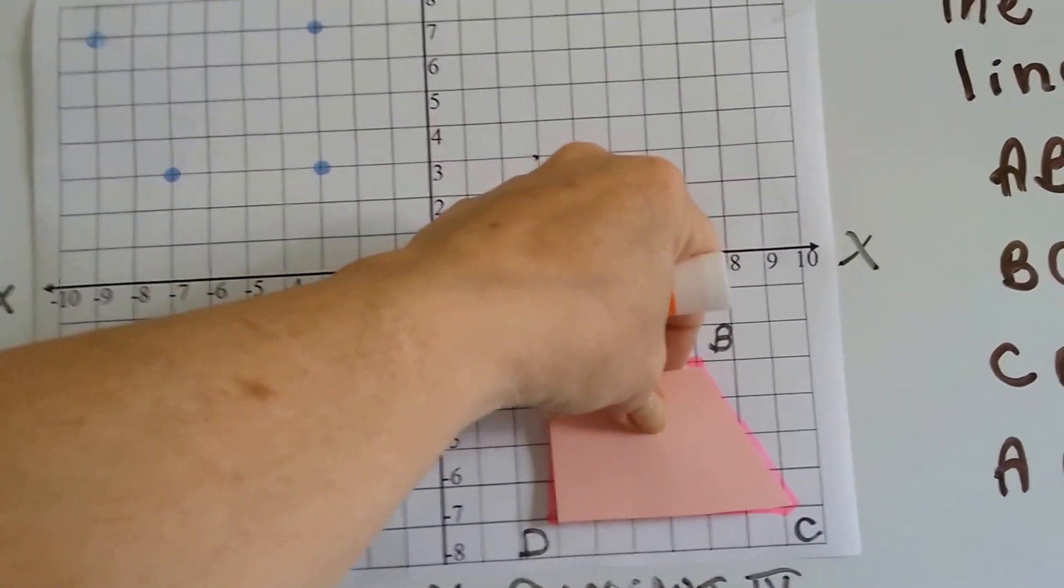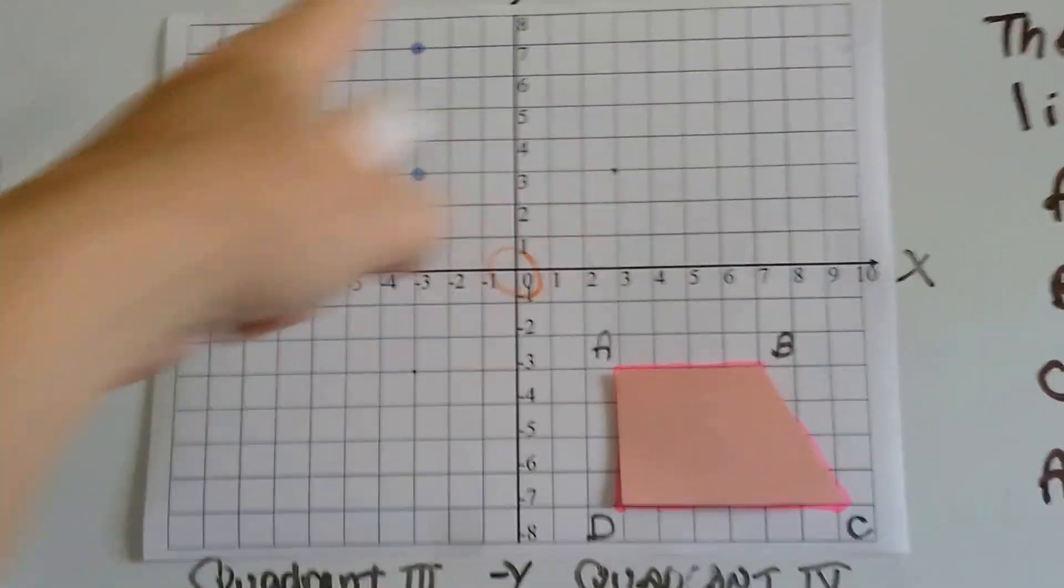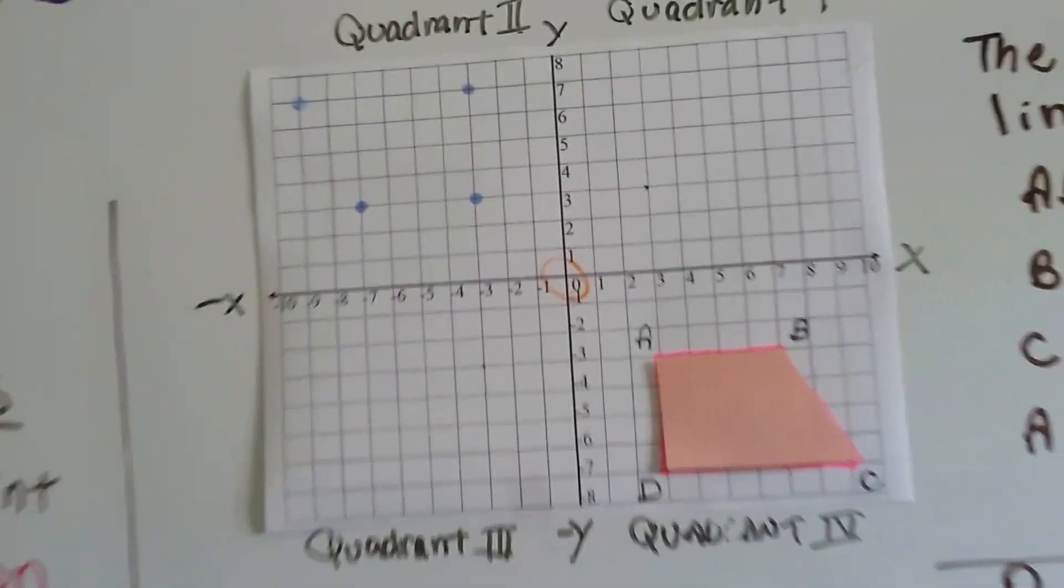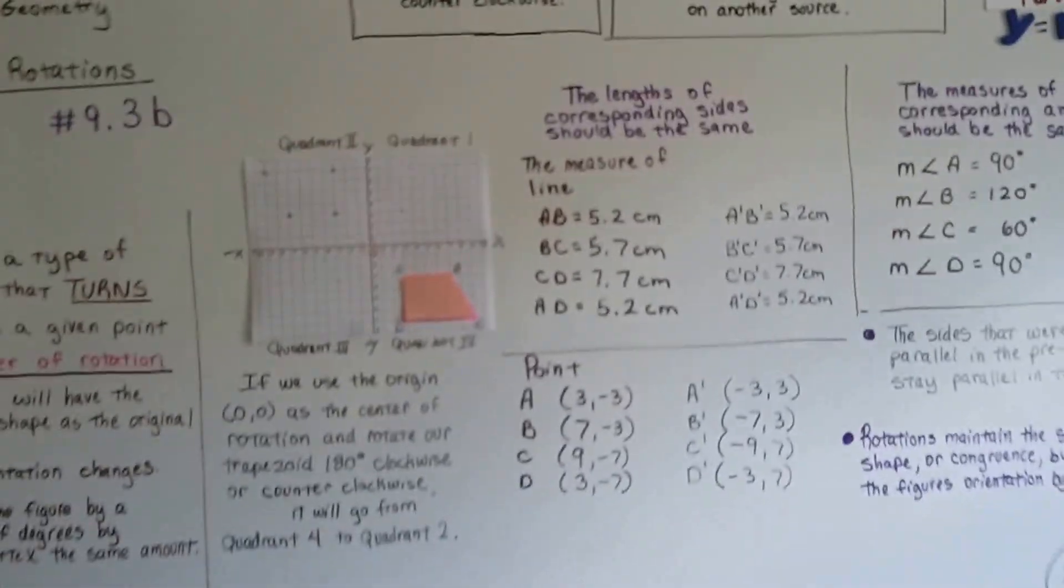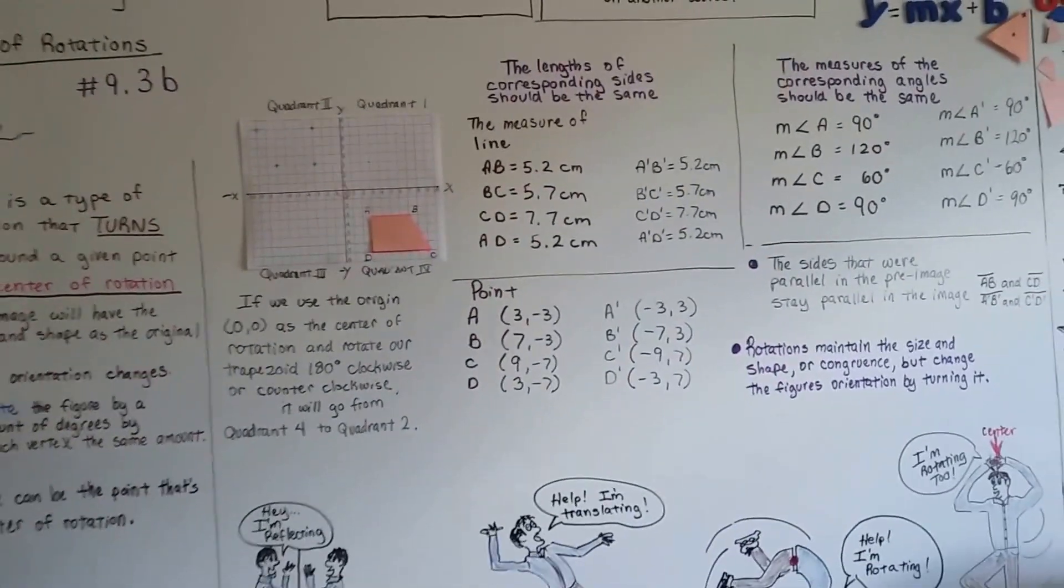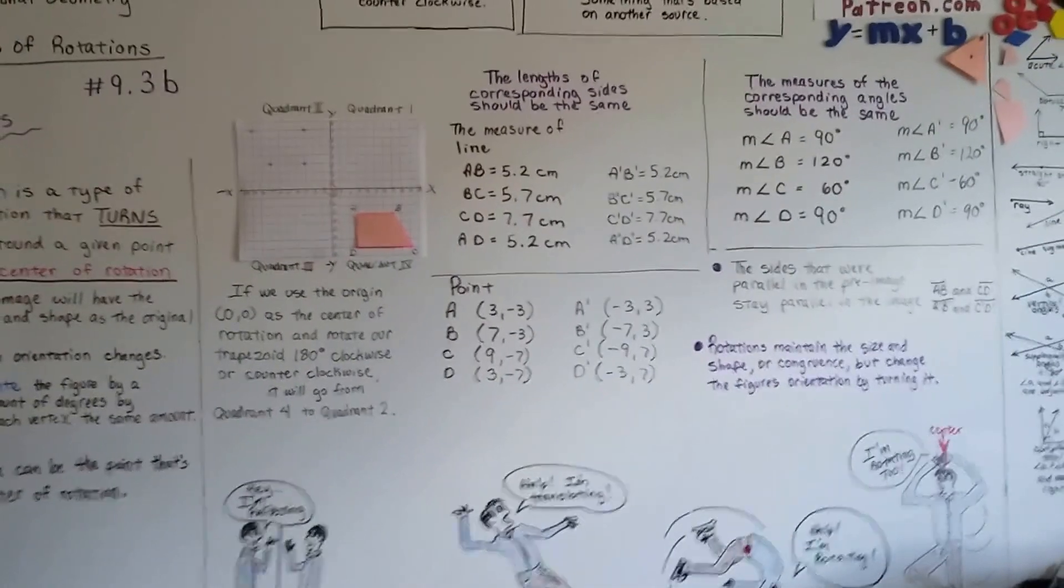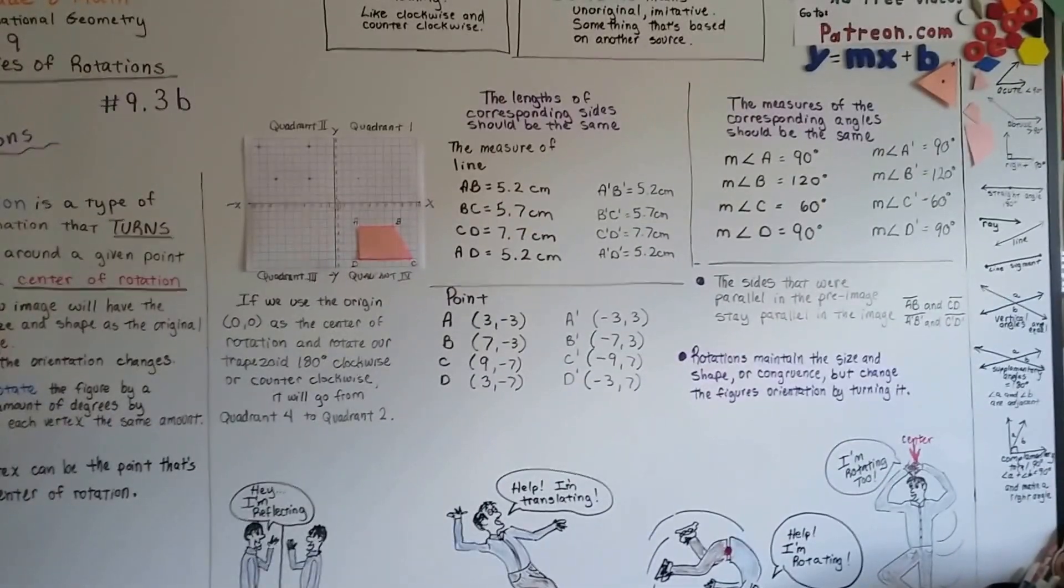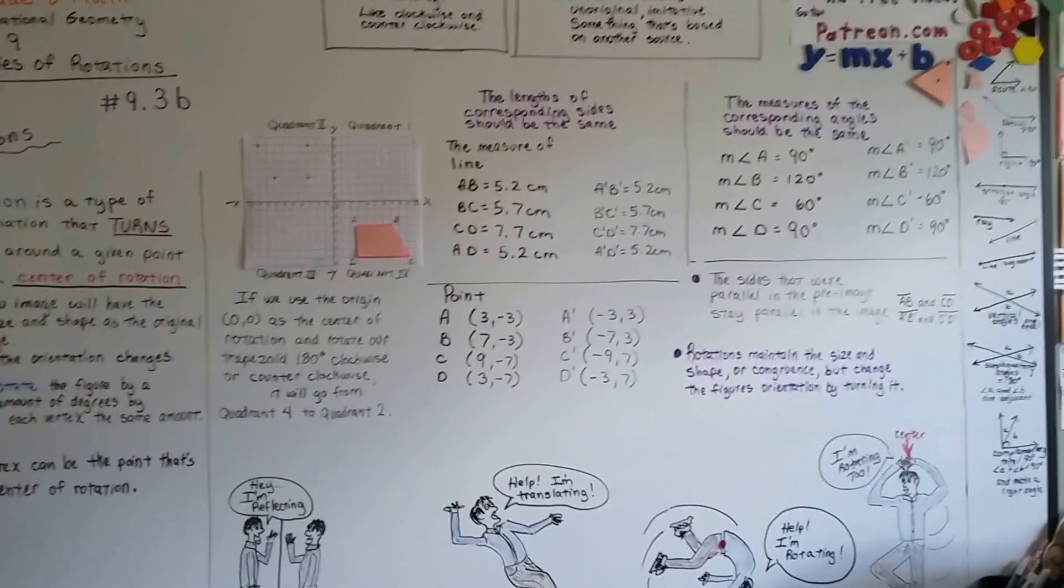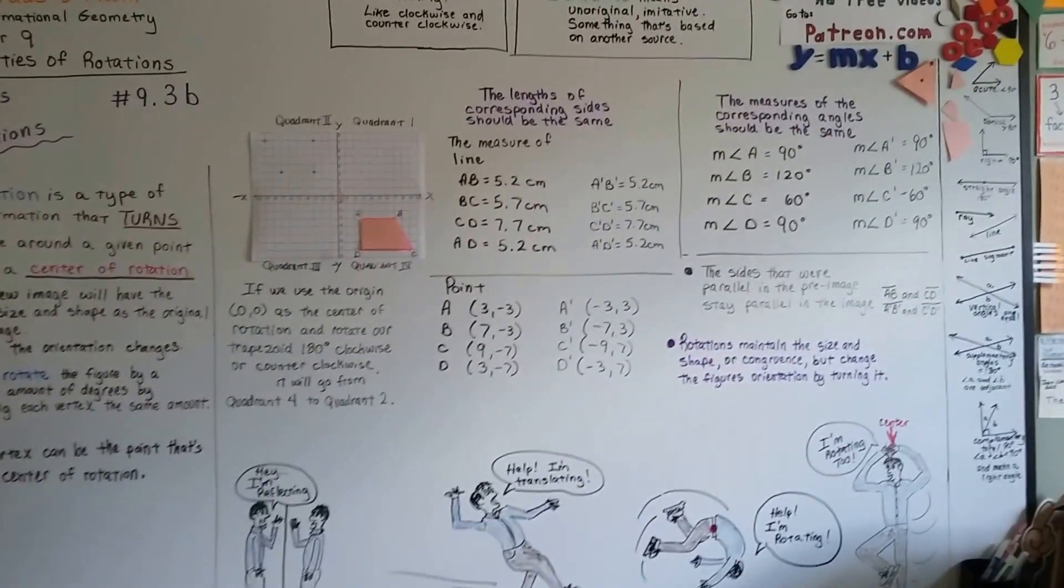We can turn it again and put it right back to where it was, and it went all the way around to all the quadrants. So we're going to graph rotations in the next video, and when we're done explaining all these, we're actually going to work on these algebraically. I'll see you next video - 9.3c. Bye.